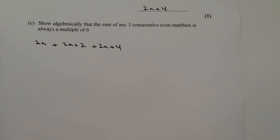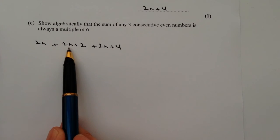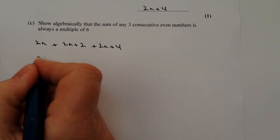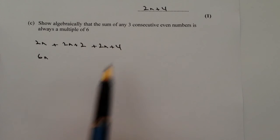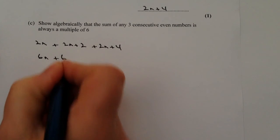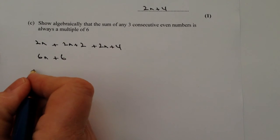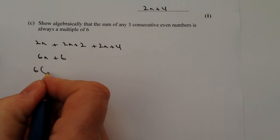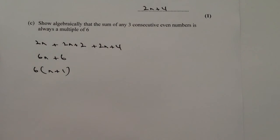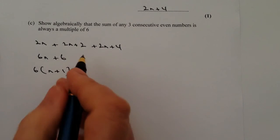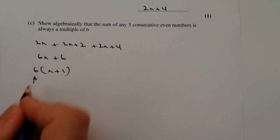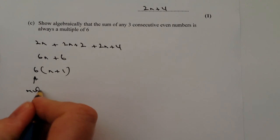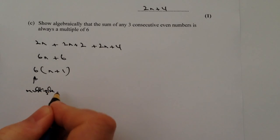If we then simplify all of that, we have 2n plus 2n plus 2n, which gives us 6n, and 2 plus 4 gives us plus 6. We can factorise that as 6 times (n plus 1), which means the sum of any three consecutive even numbers is always a multiple of 6.